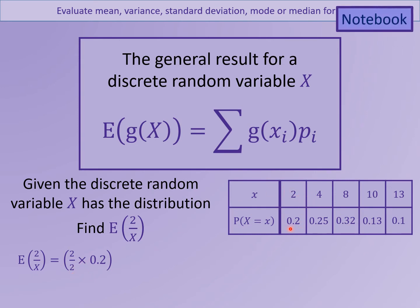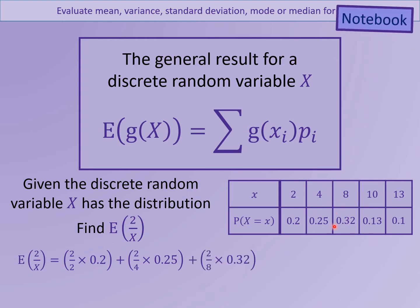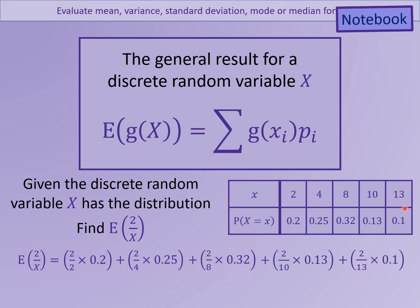So: 2 over 2 multiplied by 0.2, then 2 over 4 multiplied by the probability 0.25, then 2 over 8 multiplied by its probability, 2 over 10 multiplied by its probability, and 2 over 13 multiplied by its probability. So the expected value of 2 over X would be 0.446.